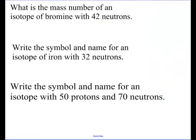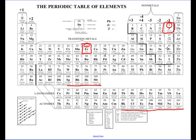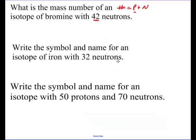What is the mass number of an isotope of bromine with 42 neutrons? Pause the video and try it. The mass number equals the number of protons plus neutrons. I need to find how many protons bromine has — go to the periodic table and find the atomic number for bromine: it's 35. So what's 35 plus 42? If you said 77 is the mass number, you got it right.